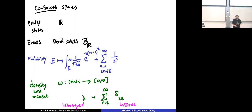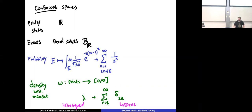We'll have a few constructions: putting spaces together, putting probabilities and measures on top of those spaces, and integrating them. This gives a specification of what you can do, and then you have to prove that an integral equals something, or estimate it using numerical methods, simulation, and so on.